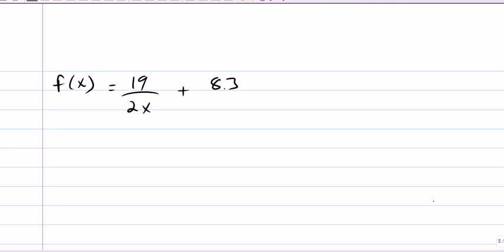Okay, last step is to find F inverse. So, we've got Y equals 19 over 2X plus 8.3. Subtract 8.3 from both sides. We're trying to isolate X.